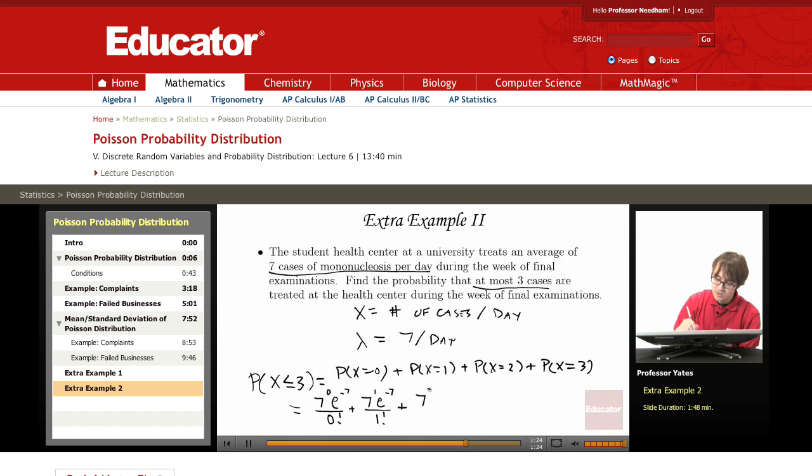Plus seven squared, e to the negative seven, over two factorial. And finally we have seven cubed, e to the negative seven, over three factorial.